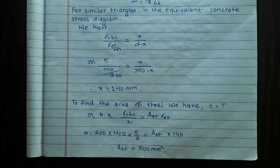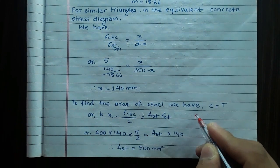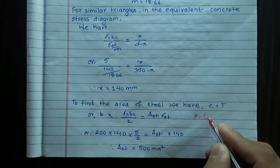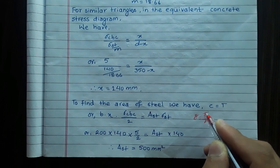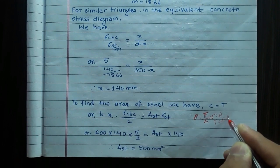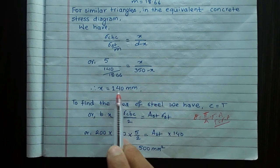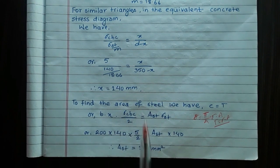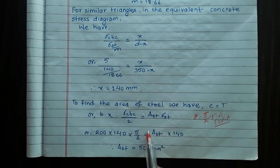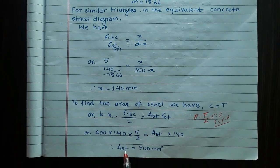To find the area of steel, we use: compressive force equals tensile force. Compressive force = b × x × σCBC / 2. Tensile force = Area of steel in tension × σST. Substituting: 200 × x × 5/2 = AST × 140. The area of steel in tension, AST = 500 mm².